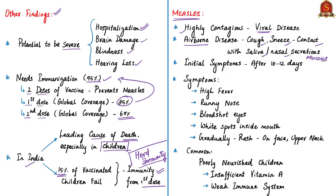Initial symptoms include high fever, a runny nose, bloodshot eyes, and tiny white spots on the inside of the mouth. Several days later, a rash develops starting on the face and upper neck and gradually spreading downwards. Severe measles is more likely among poorly nourished young children, especially those with insufficient vitamin A or whose immune systems have been weakened by HIV, AIDS, or other diseases.